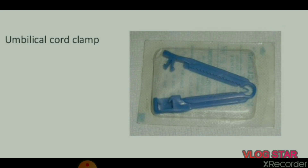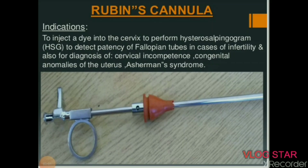Next is Pinard's fetal stethoscope for auscultation of fetal heart. Next is umbilical cord clamp, used to clamp the umbilical cord after delivery. Next instrument is Rubin's cannula. Indications: to inject dye into the cervix to perform hysterosalpingogram (HSG), to detect patency of fallopian tubes in cases of infertility, and for diagnosis of cervical incompetence, congenital anomalies of the uterus, and Asherman's syndrome.